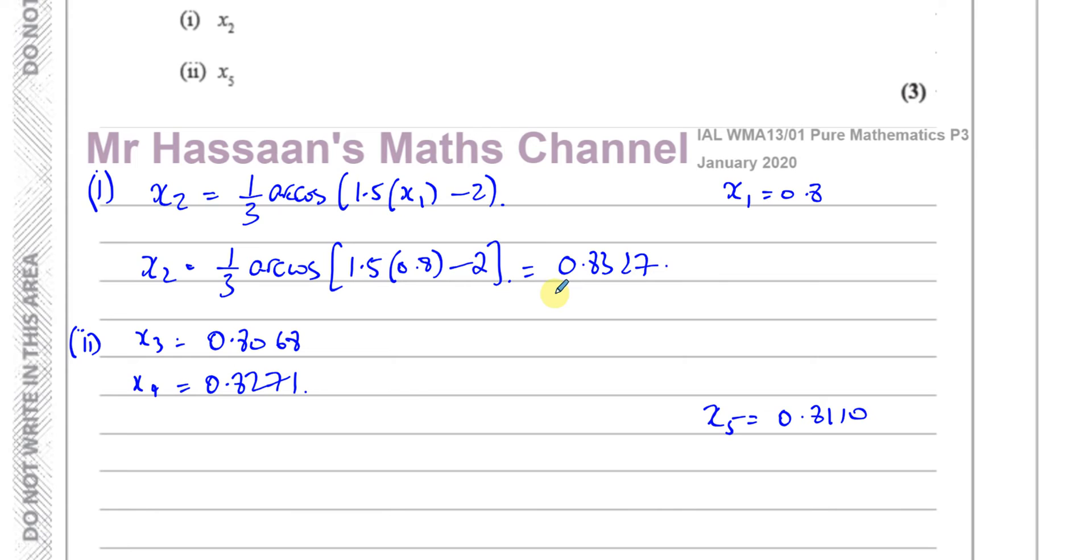So I've put it in once. That's x2. So that's the answer for part 1. x2 equals 0.8327. That's the answer for part A. A part or B part 1. Part 2,